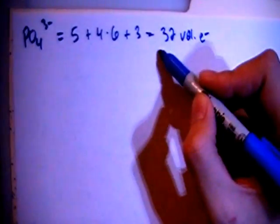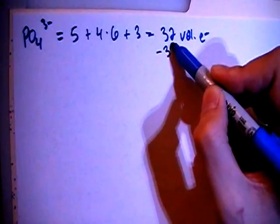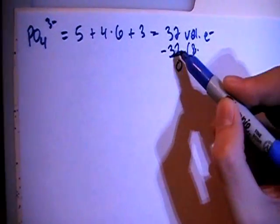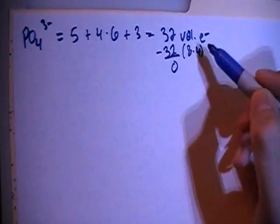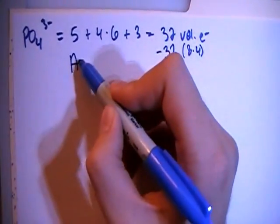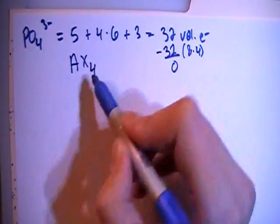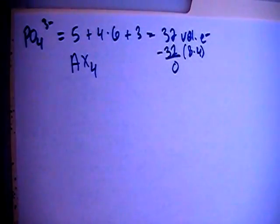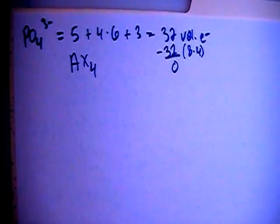So let's go ahead and subtract out the largest multiple of 8, which is 32, which gives us 0. And since 32 is equal to 8 times 4, that means that this structure is going to be an AX4 structure, meaning that there is one central atom surrounded by four peripheral atoms and no non-bonding electron pairs.